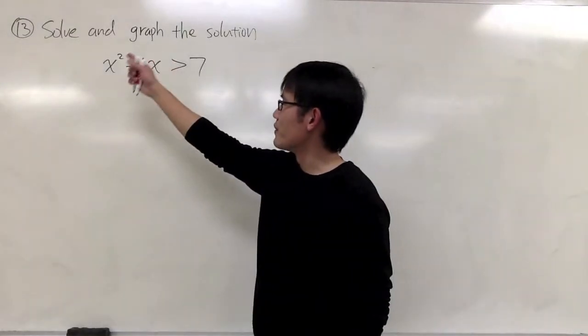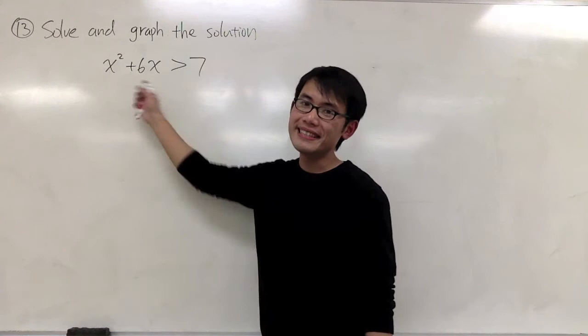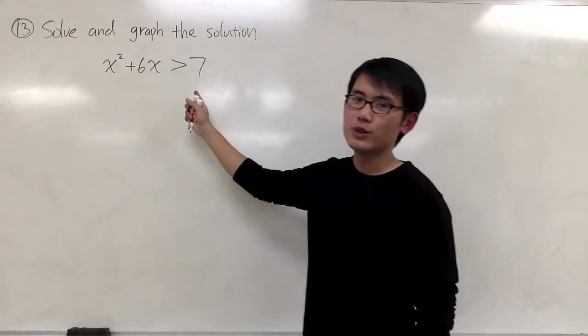For question number 13, we are going to solve and graph the solutions to this inequality: x squared plus 6x greater than 7.